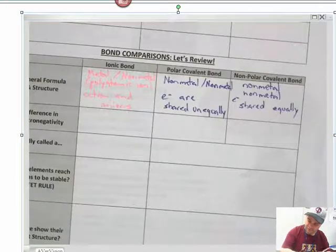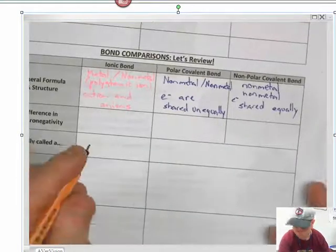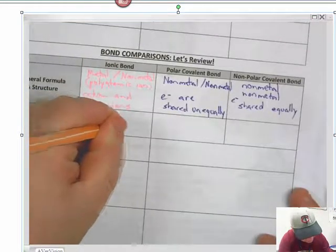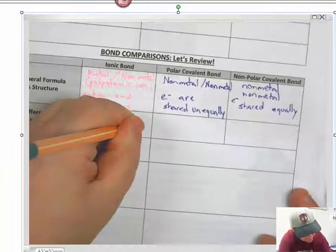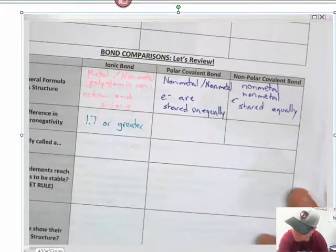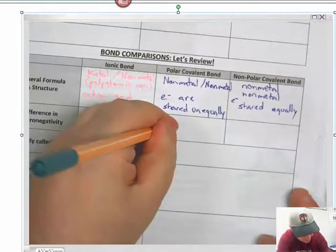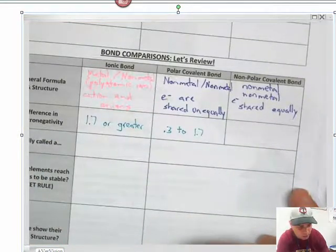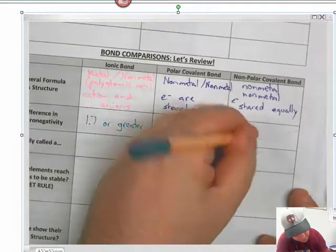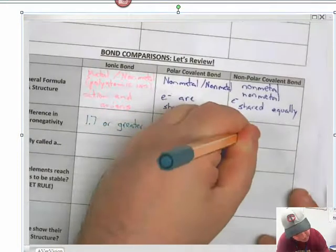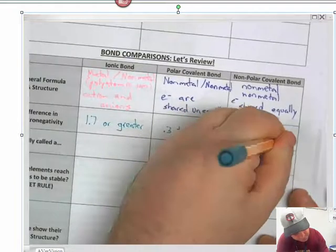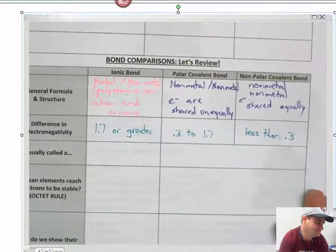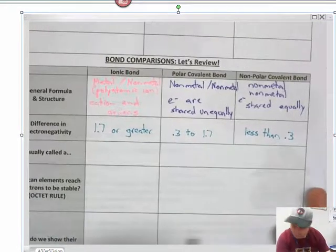Electronegativity differences. Remember, the electronegativities are listed in the reference packet. So if it's 1.7 or greater, it is 50% ionic bonding in there, or at least. If it's 0.3 to 1.7, that is polar covalent. And then non-polar is going to be less than 0.3.